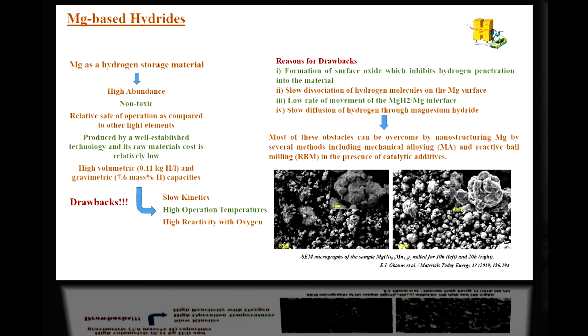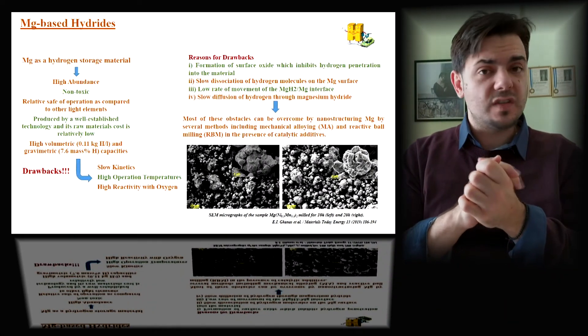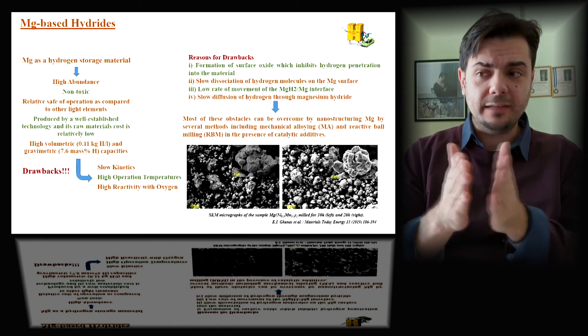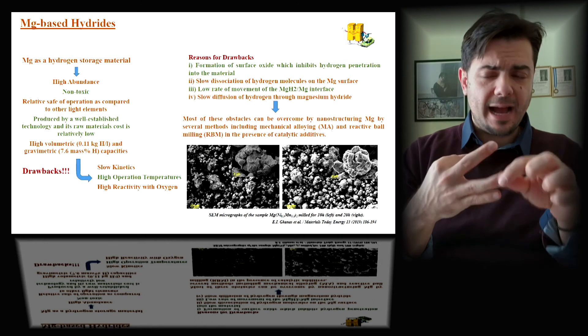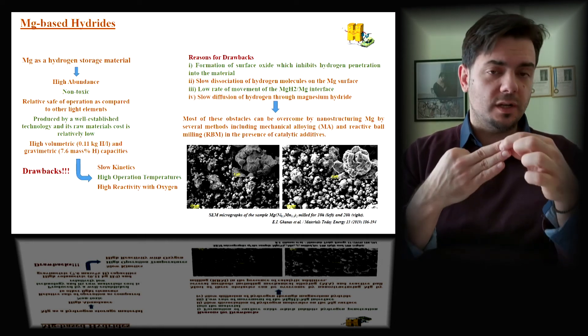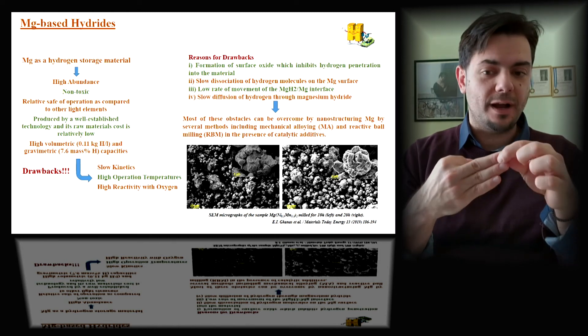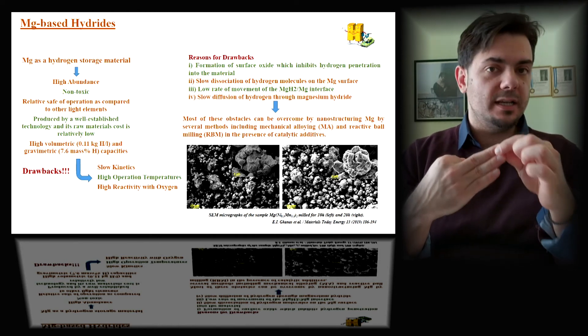Finally, a very important family is the magnesium family. The magnesium is important because it's quite abundant on the Earth's crust, so we can find magnesium really easily. It's a non-toxic material, it's quite safe when it operates, and has very high volumetric and gravimetric capacity. Gravimetrically, it can go up to, theoretically, 7.6% of the whole mass of the material. But there are three main drawbacks: the slow kinetics, the high operation temperatures, and unfortunately, the high reactivity with hydrogen. So we have to be really careful when working with magnesium.